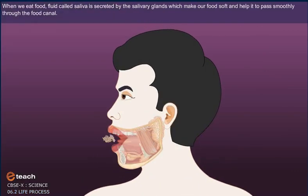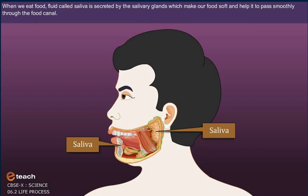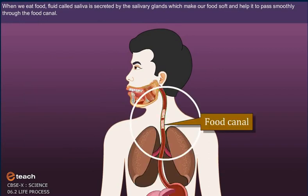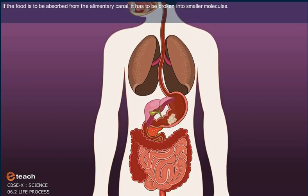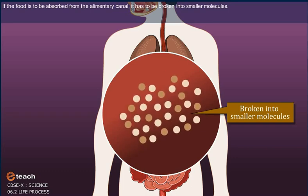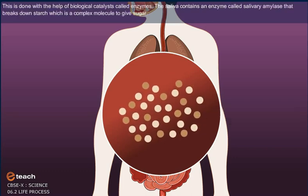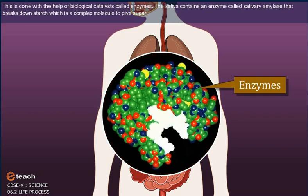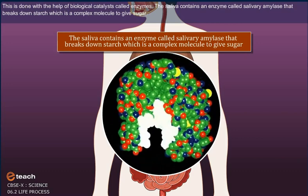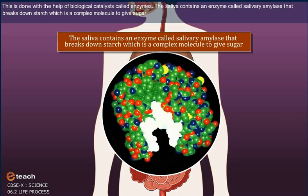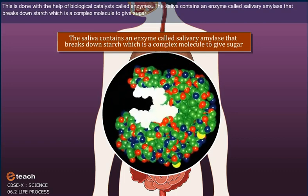When we eat food, a fluid called saliva is secreted by the salivary glands which makes our food soft and helps it pass smoothly through the food canal. If the food is to be absorbed from the alimentary canal, it has to be broken into smaller molecules. This is done with the help of biological catalysts called enzymes. The saliva contains an enzyme called salivary amylase that breaks down starch, which is a complex molecule, to give sugar.